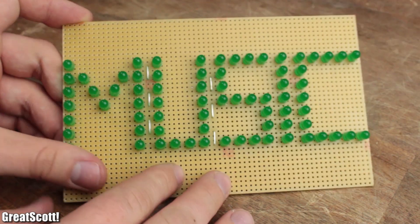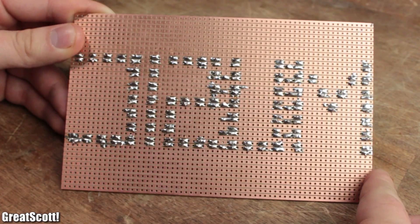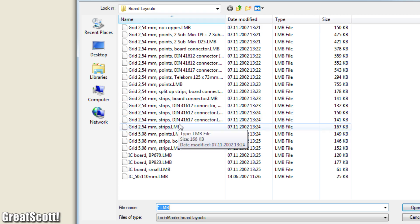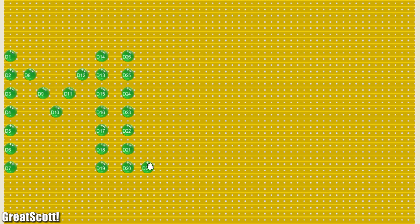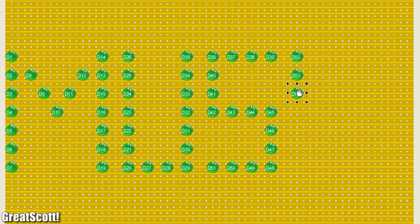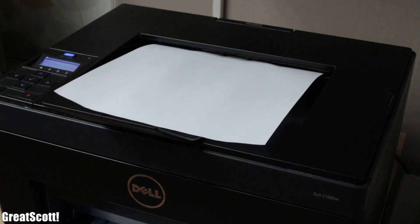First off, we're going to need the LED sign itself. For that I used the software Lochmaster with a stripboard template to create my initial design by placing 73 green LEDs on the board to form the word music. Then I printed it out.